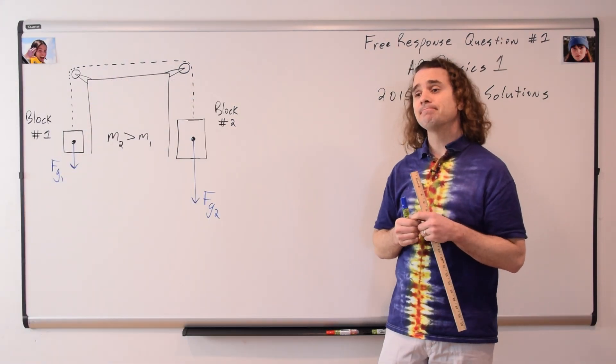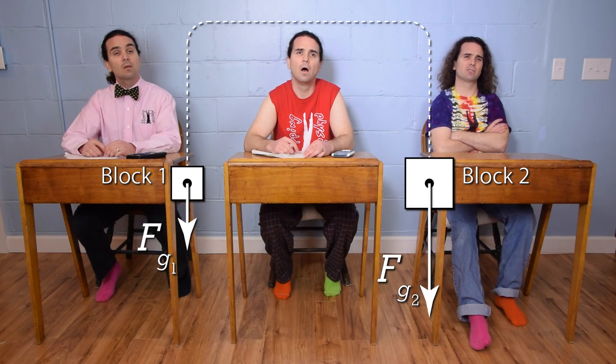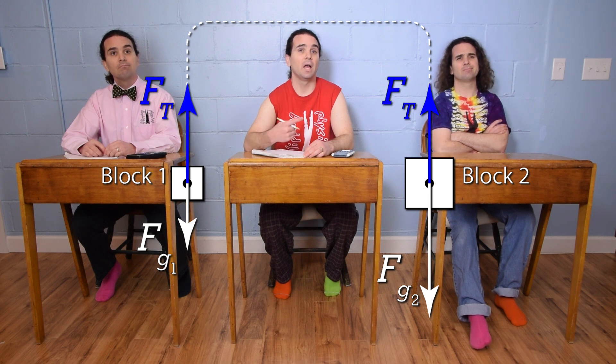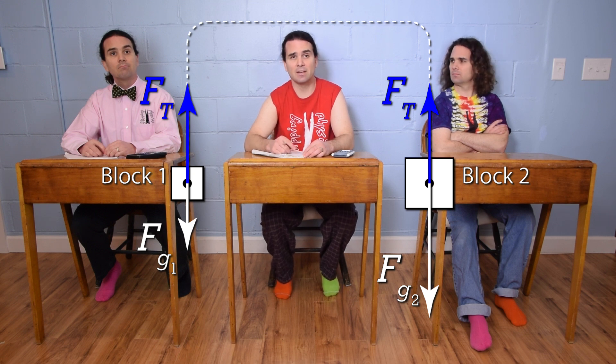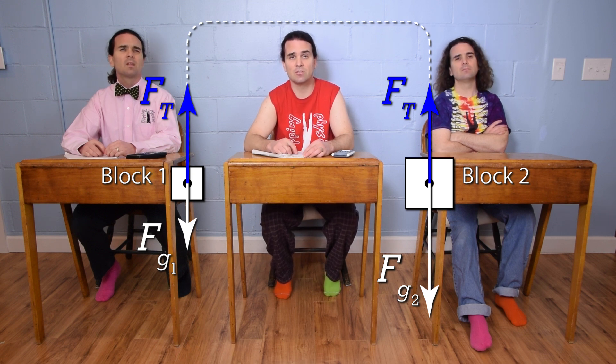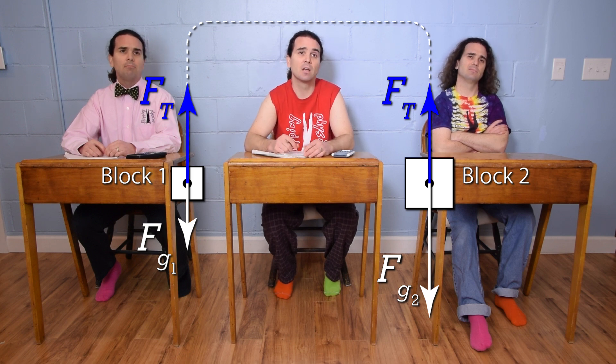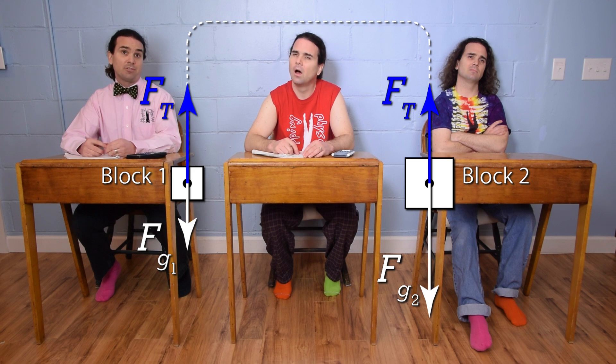Bo, please continue. There is a tension force in the string and it acts up on both blocks. And because the string and pulleys have no mass, the magnitudes of those two tension forces are the same. Oh, and because the pulleys have no friction. But how long should we draw the tension forces?